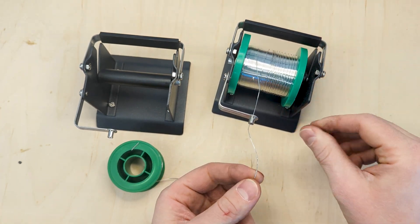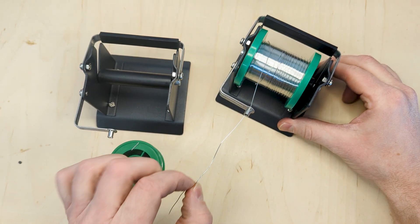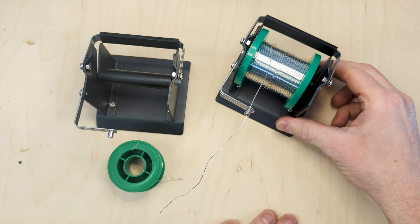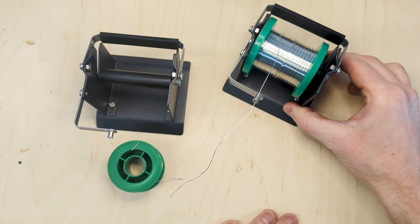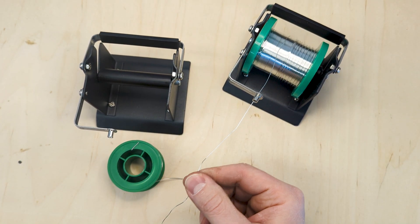Here I have a solder dispenser. It's really nice because I can pull the solder off as I'm soldering, and it has a lot of weight to it so it doesn't move around when I'm pulling the solder.